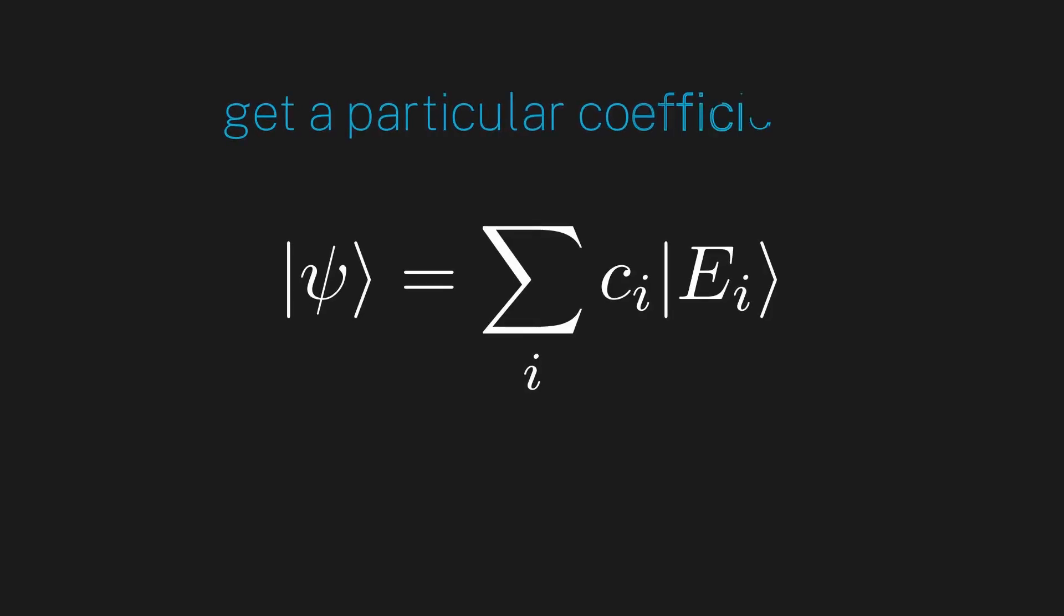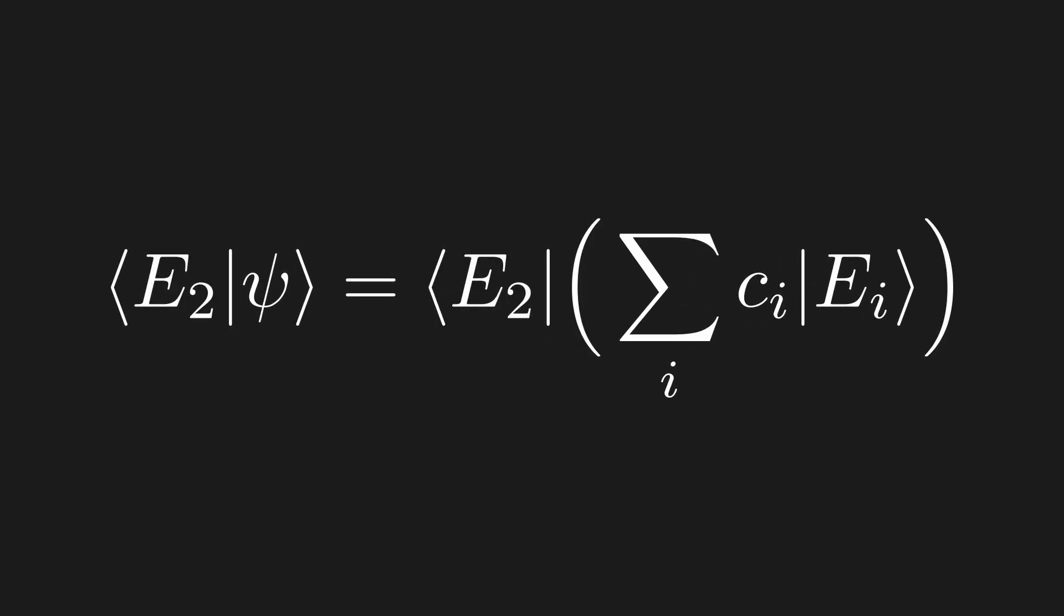So, if we have an orthonormal basis, we can expand an arbitrary quantum state in this basis. Now, how would we get a particular coefficient? Well, because the vectors are mutually orthogonal, we can use the inner product to single out the coefficient that we care about. So, if we want the second coefficient, let us take the inner product with the second basis vector.